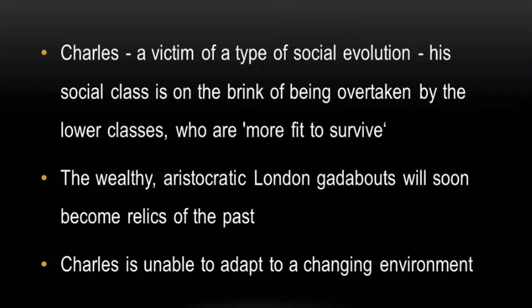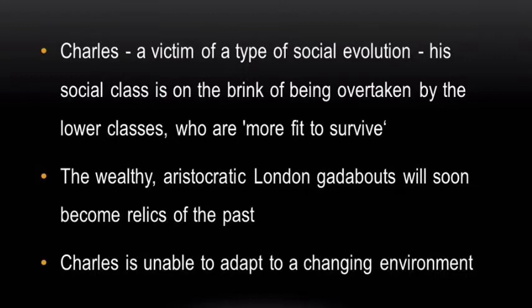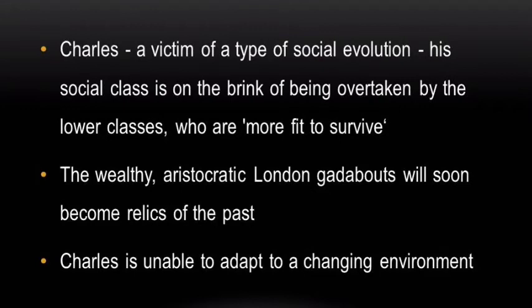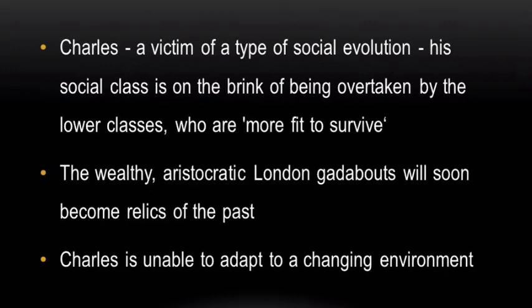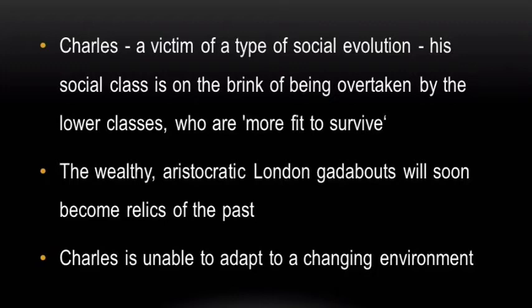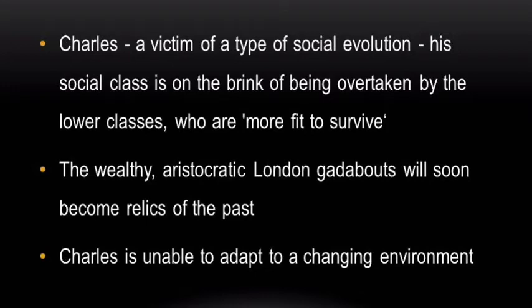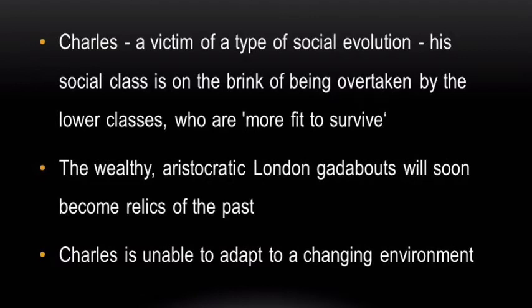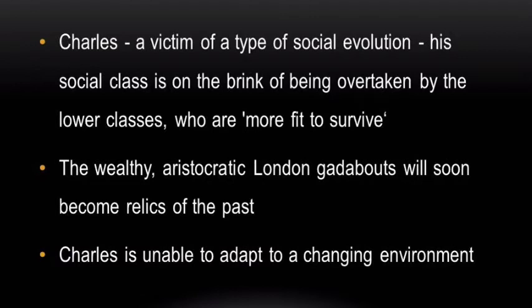The irony is that Charles himself is a victim of a type of social evolution. His social class is on the brink of being overtaken by the lower classes, who are more fit to survive, and his wealthy aristocratic lifestyle will soon become a relic of the past. When Ernestina's father offers to make him a partner in the family business, Charles cannot accept because he doesn't think it fitting for a gentleman to go into commerce. He is unable to adapt to a changing environment, and so he is a victim of evolution.